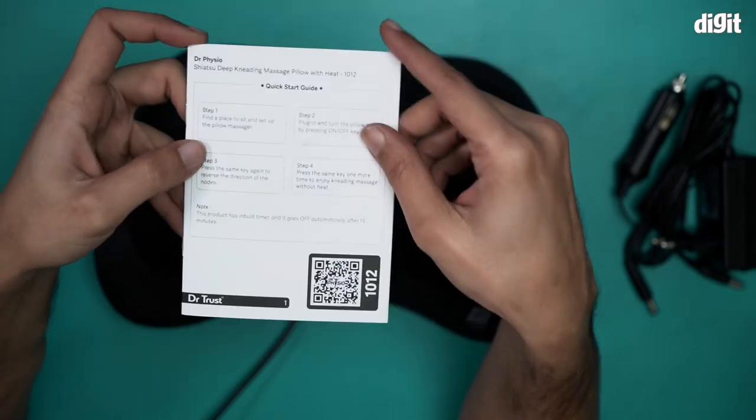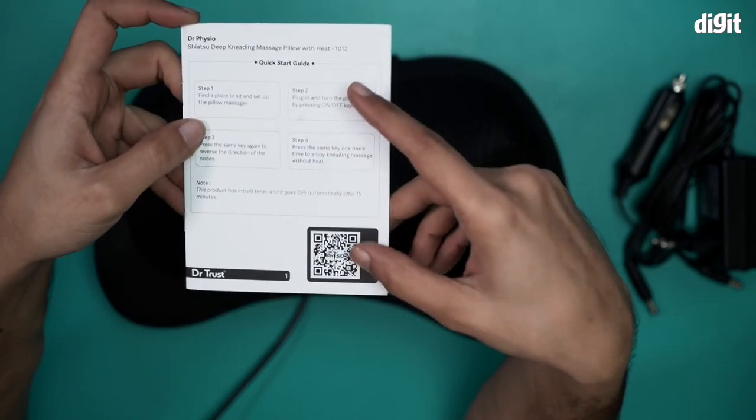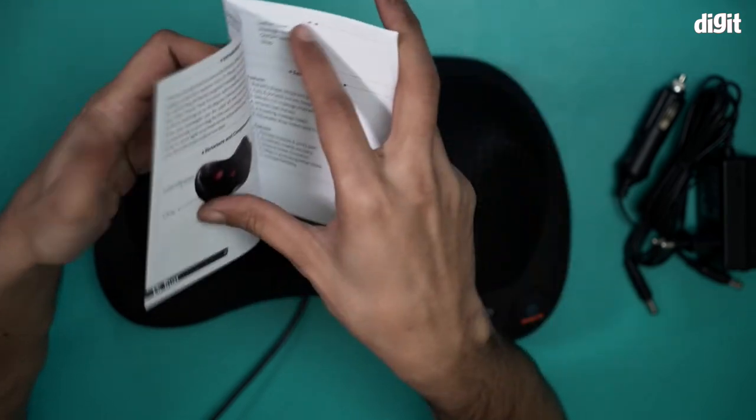Step one, step two, in four steps you can start using this device. There's also a QR code for when you want to download the app.